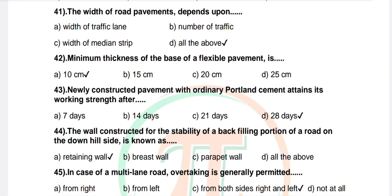Question 45: In case of a multi-lane road, overtaking is generally permitted — options: from right, from left, from both sides right and left, not at all. Correct answer: from both sides right and left.